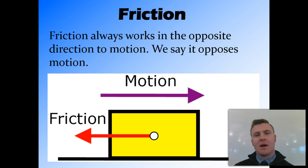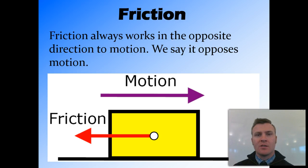In this example, you can see this box. The motion is moving it to the right. Therefore, friction will pull on it to the left and slow it down.